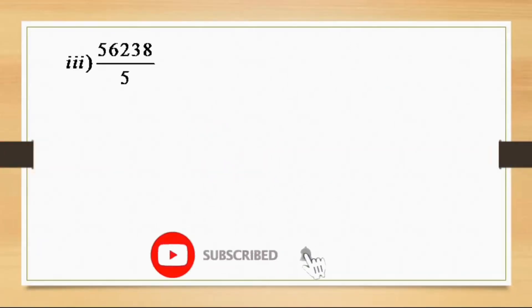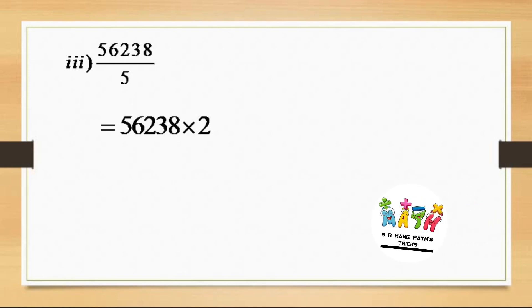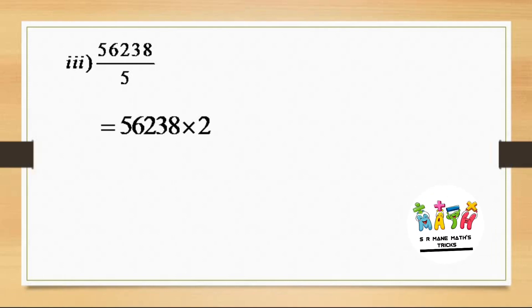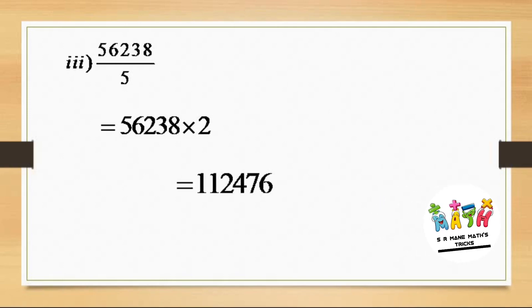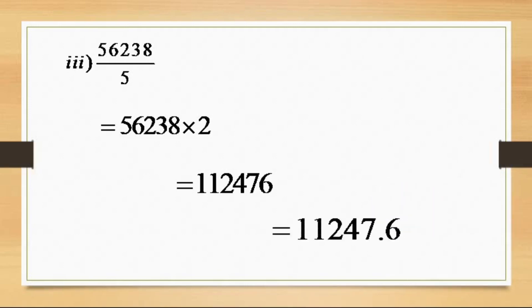For the third example: 56238 divided by 5. We multiply 56238 by 2 to get 112476. Taking the decimal one place from the right, we get 11247.6 as the answer. As a reminder: multiply the number by 2, then place the decimal one digit from the right to left.